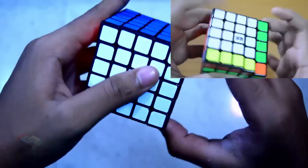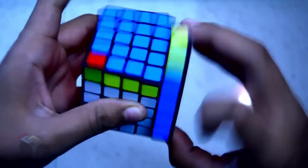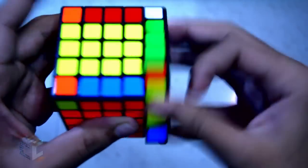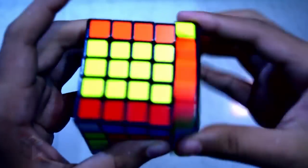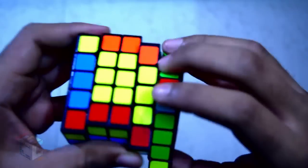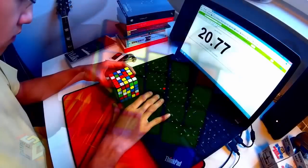After some breaking in, it becomes smoother and a bit faster too. Speed is very controllable and I don't overshoot on the Bochuang. The cube also doesn't have those random lockups or catches which I really like. The outer layers are a bit wider than the inner layers which helps with stability.